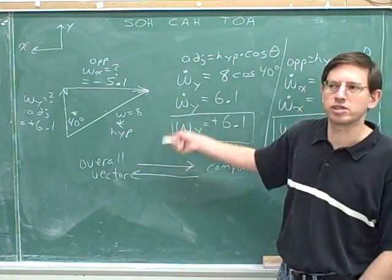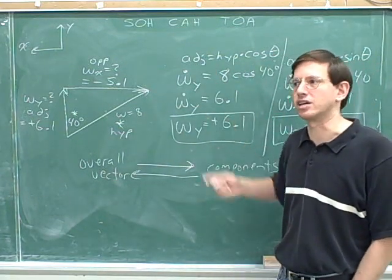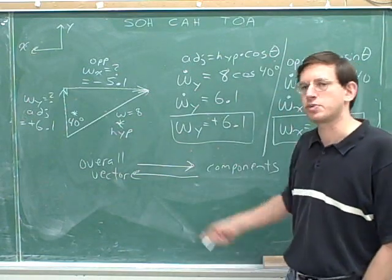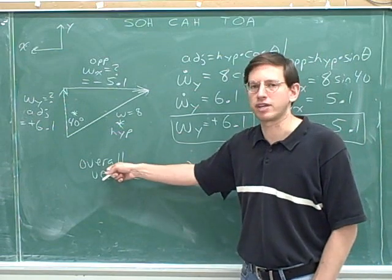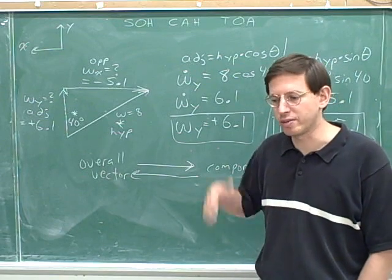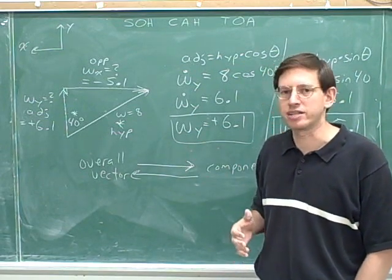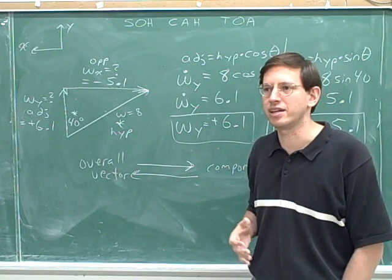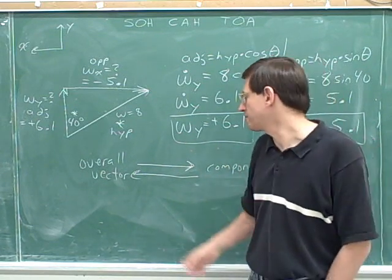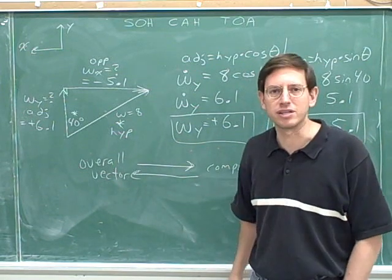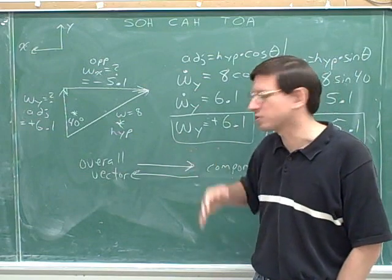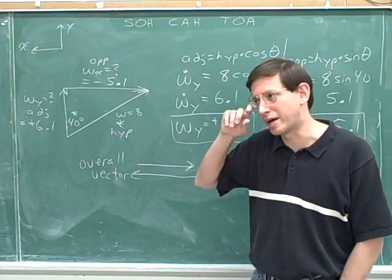Well, you might have noticed that in this problem, I switched things up a bit. I went back to the earlier skill. Even though, recently, we've been going over how to go from the components to the overall vector, here I switched back and I gave you the overall vector again and asked you to find the components. And the reason for that is, in your actual problems and tests, you're going to have to be constantly going back and forth between these two types of problems and not getting confused about the two different types of problems. You have to be able to go from the overall vector to the components and from the components to the overall vector. So, you need to keep practicing going back and forth between these two different methods without getting confused about them.